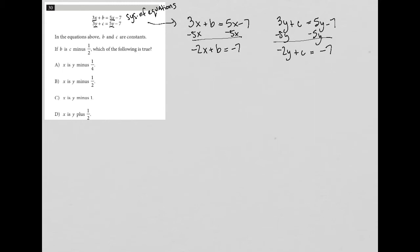Then the question goes on to say, in the equations above, b and c are constants. If b is c minus 1 half, so let's just write that down, b equals c minus 1 half, which of the following is true? Well, this is kind of an odd bit of information to be given, so I'm going to use it right away. It tells me that b equals c minus 1 half, so I'm going to just replace this b with c minus 1 half.